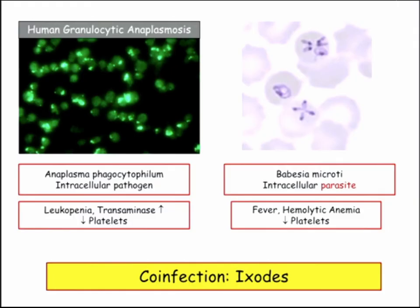So co-infection with Ixodes tick — we're on Ixodes tick now, not other ticks. Anaplasma phagocytophilum is an intracellular pathogen causing human granulocytic anaplasmosis, so it's in granulocytes, in PMNs, as opposed to human monocytic ehrlichiosis which is in monocytes. They don't seem that interested in ehrlichiosis, and it's not a co-infection on Ixodes — so it's going to be anaplasma they're going to ask about.